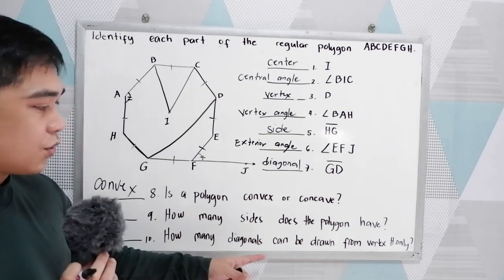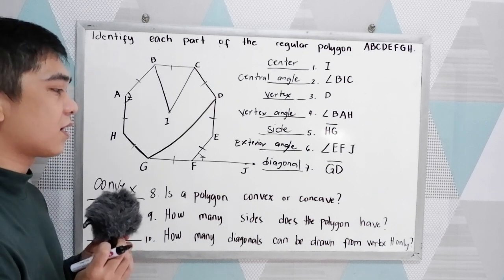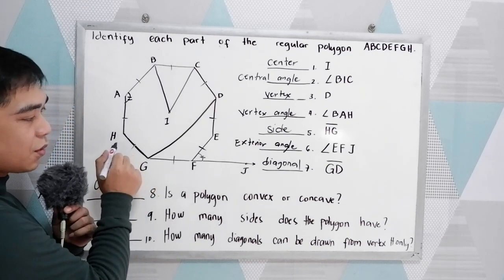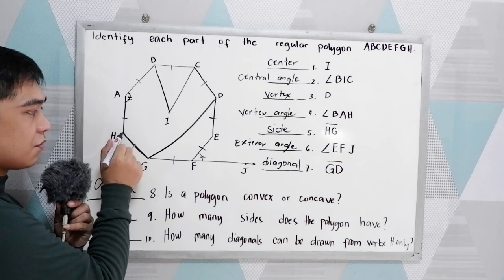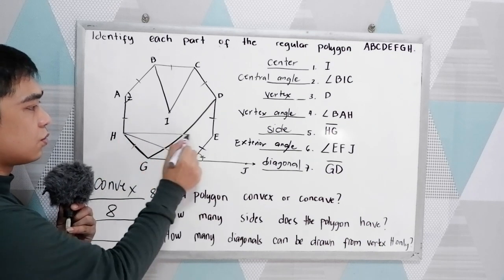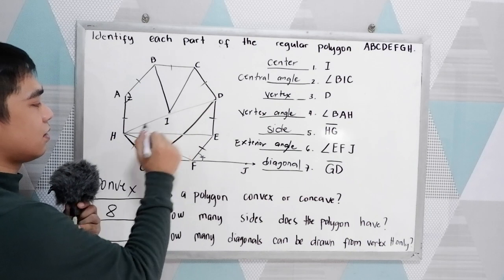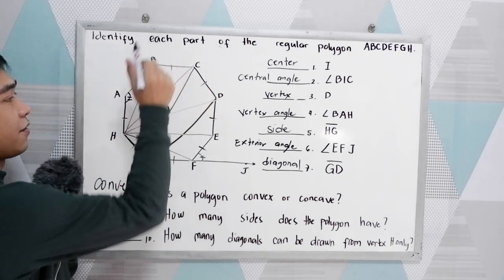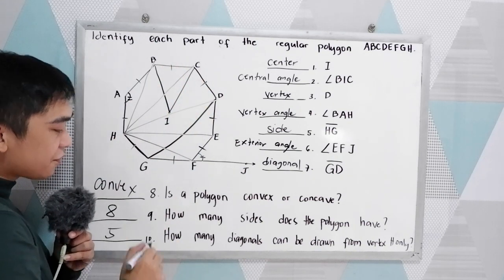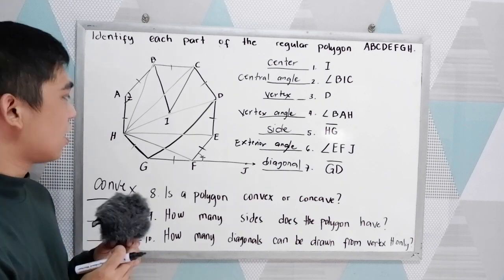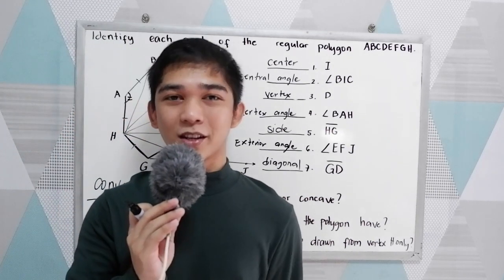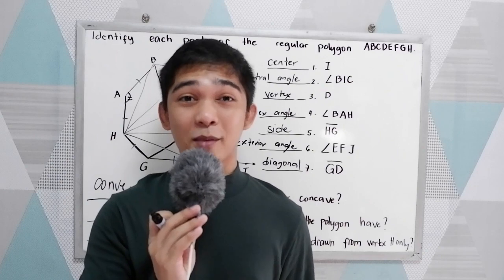Number 10: how many diagonals can be drawn from vertex H only? Drawing diagonals from vertex H: 1, 2, 3, 4, 5 — we have 5 diagonals from vertex H. Thank you for watching Senior Pablo TV.